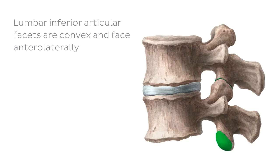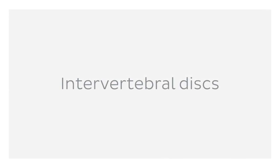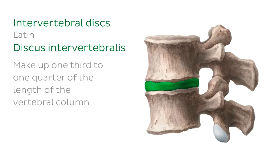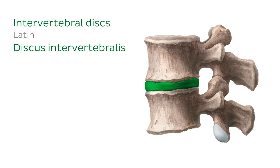Now that we've covered the bony structures of the thoracic and lumbar vertebrae, let's move on to the intervertebral discs. The intervertebral disc is sandwiched between two adjacent vertebrae. These discs make up one third to one quarter of the length of the vertebral column, found interposed between adjacent vertebrae from the axis (C2) to the sacrum.